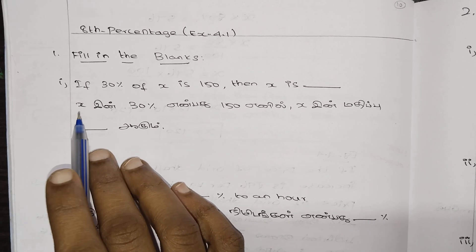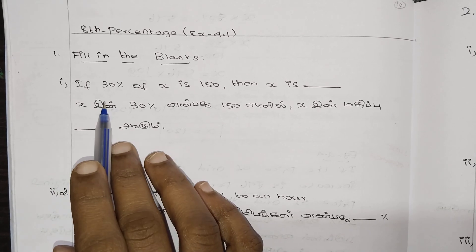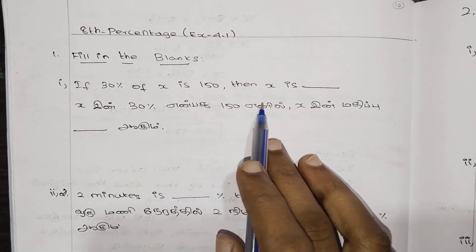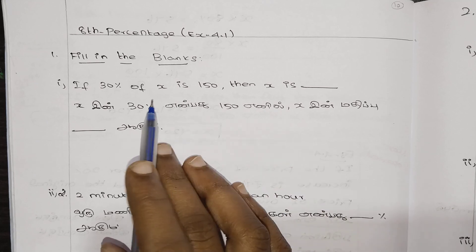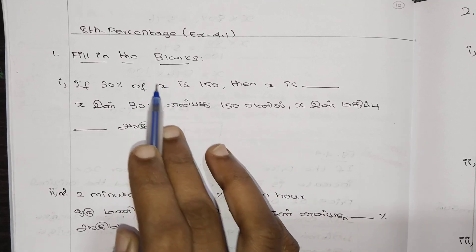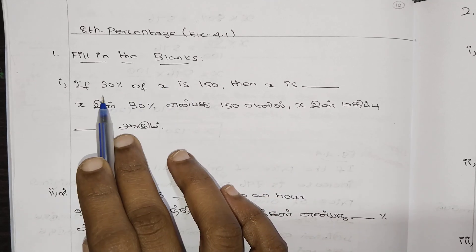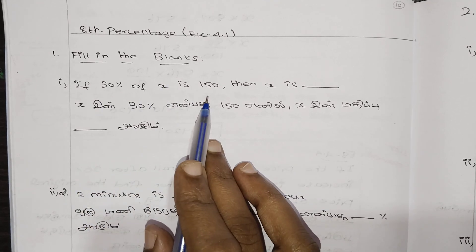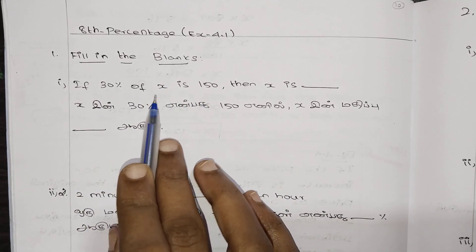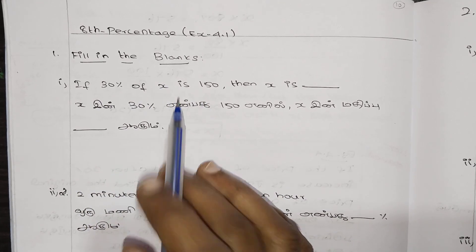First question: If 30% of X is 150, then X is what? So, if 30% of any number is 150, then we will find that number.